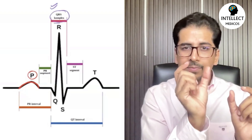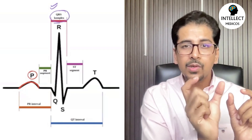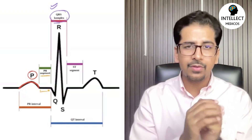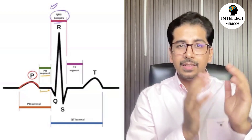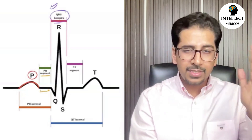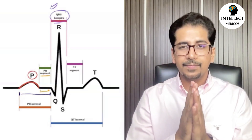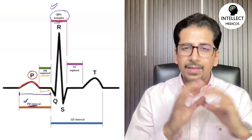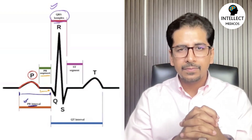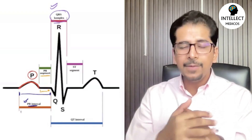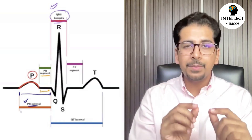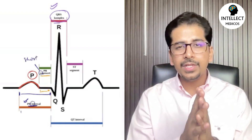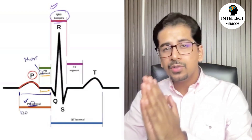The area between the P-wave and the QRS complex is called the PR segment — from the end of the P-wave to the start of the QRS complex. The PR interval is the area from the start of the P-wave to the start of the QRS complex. By default, if you see PR written, they are talking about the PR interval. Segment is always shorter; interval is longer. The normal range of PR interval is 120 to 200 milliseconds.